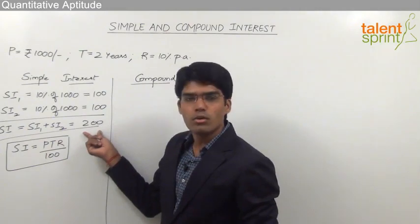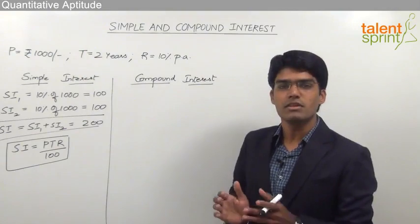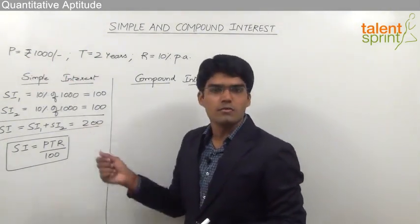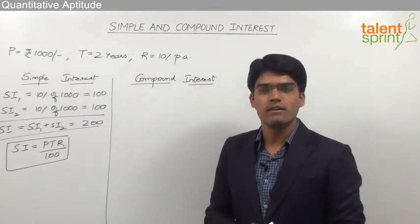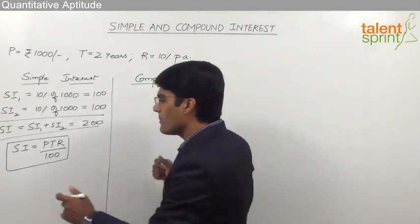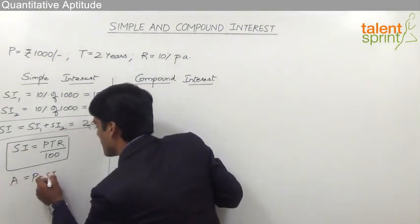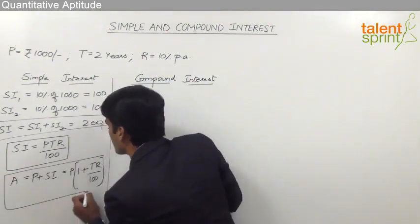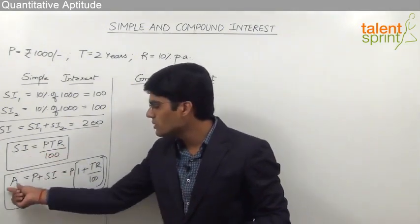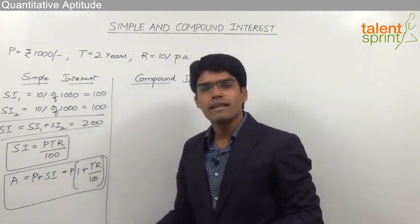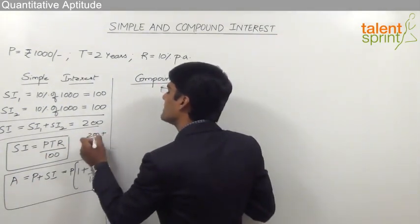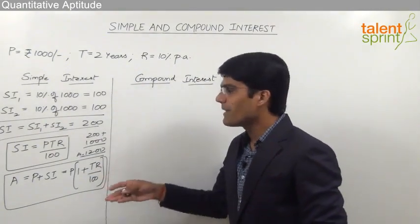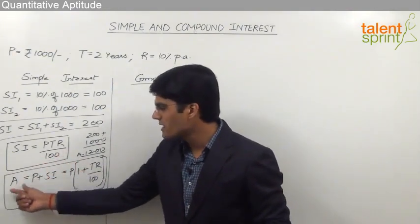Apart from interest, there is one more term known as amount. Amount is nothing but the total money the borrower pays to the lender. In this case, 1000 rupees was borrowed and the interest is 200 rupees, so the total amount the borrower pays is 1000 + 200 = 1200 rupees. The total amount A equals principal plus simple interest, which can also be written as P × (1 + TR/100). Total amount A is denoted by A and equals 1200 rupees here.